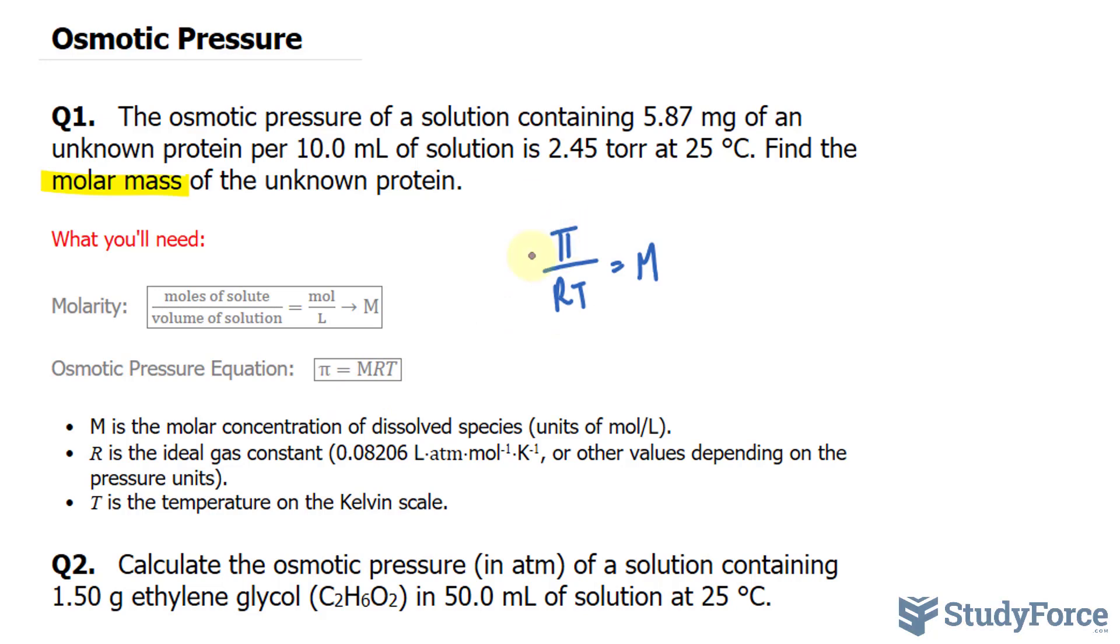This symbol will be replaced with 2.45 torr. So we have 2.45 torr, and to convert from torr to atmosphere, since our gas constant is in atmosphere, we'll multiply this by 1 atmosphere per every 760 torr. So all of this expression will be placed into the numerator of the fraction. This unit and this unit cancel out, and we'll do that calculation afterwards.